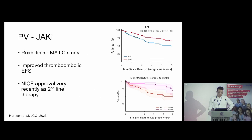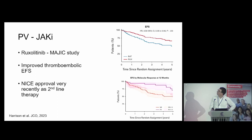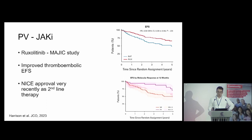I'll briefly mention the MAGIC study — a really interesting UK investigator-led study led by Professor Harrison, comparing ruxolitinib, a JAK inhibitor, in PV patients intolerant or resistant to hydroxycarbamide as second-line therapy. Of relevance here, it showed an improvement in event-free survival and specifically an improvement in thromboembolic event-free survival — a reduction in thrombosis risk in patients receiving ruxolitinib. Interestingly, a molecular response defined as a 50% or greater reduction in JAK2 allele burden correlated with reduced event-free survival and overall survival. Ruxolitinib has just gained NICE approval as a second-line treatment for polycythaemia vera, largely on the back of this data.